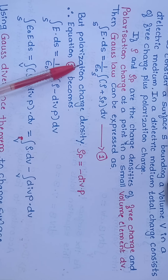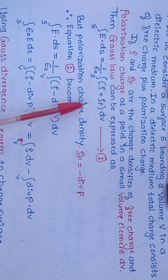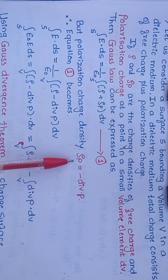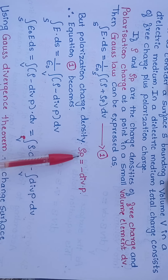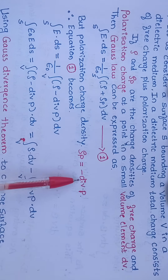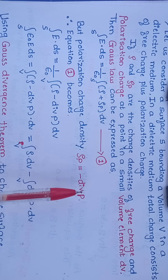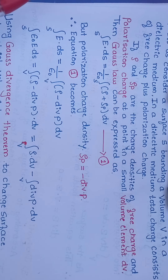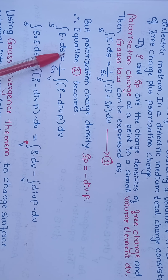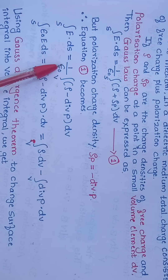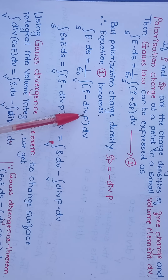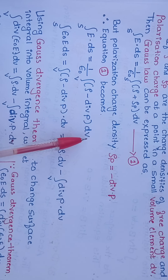The polarization charge density is given by ρ_p equal to minus divergence of P. Substituting this value into equation number 1, the surface integral of E dot dS equals (1/ε₀) times the volume integral of (ρ minus divergence of P) dv.